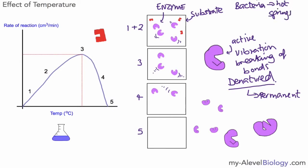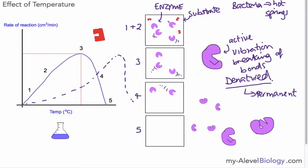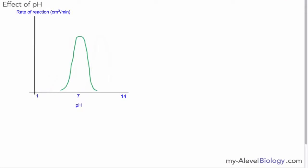It's important to remember that some enzymes can work at higher temperatures — for example, in certain bacteria that live in hot springs. Their graph would shift much more towards the higher end of the temperature scale. The enzymes would eventually become denatured, but that would happen at much higher temperatures.